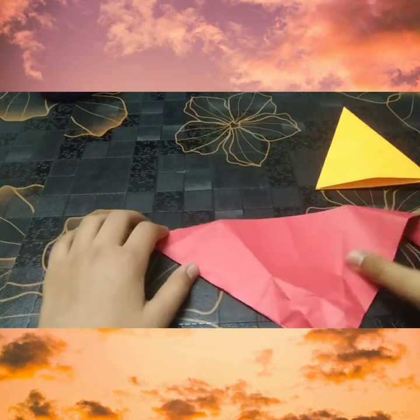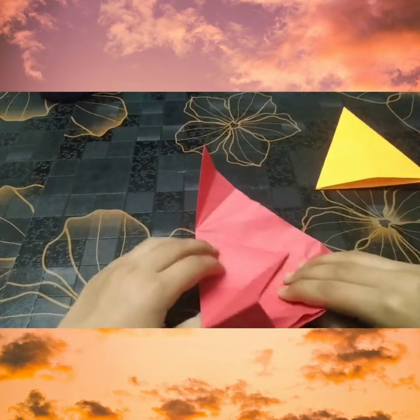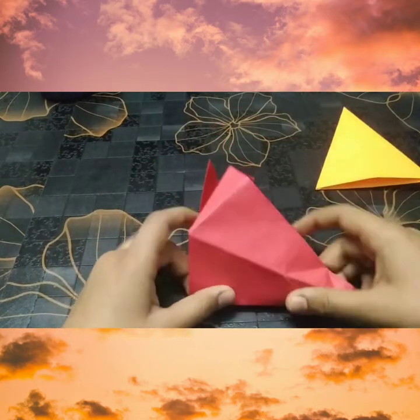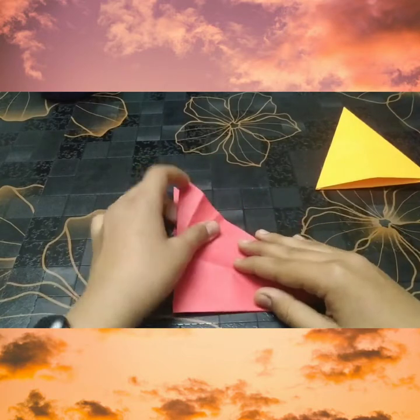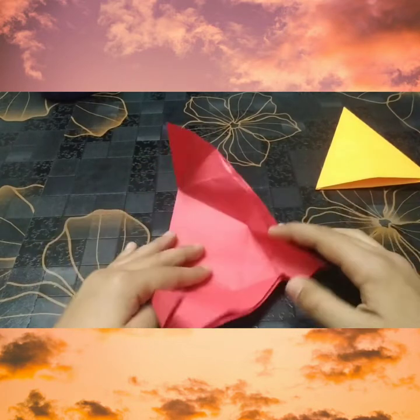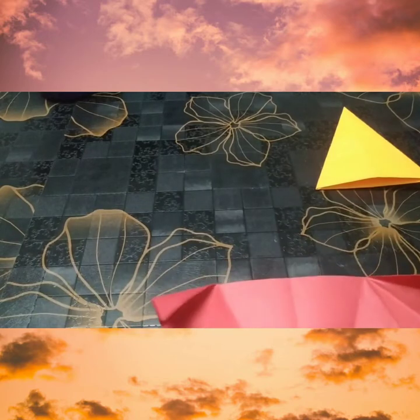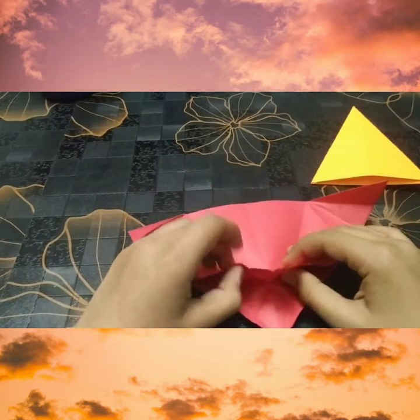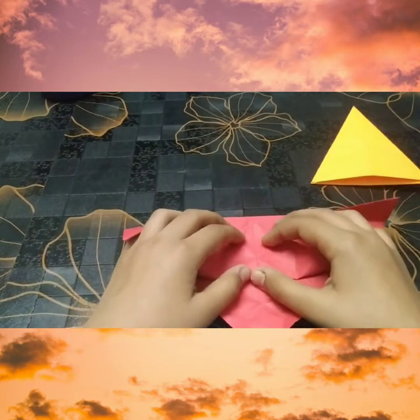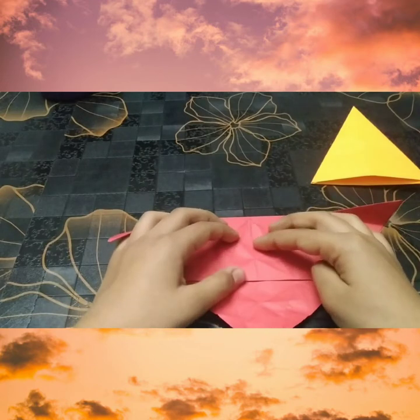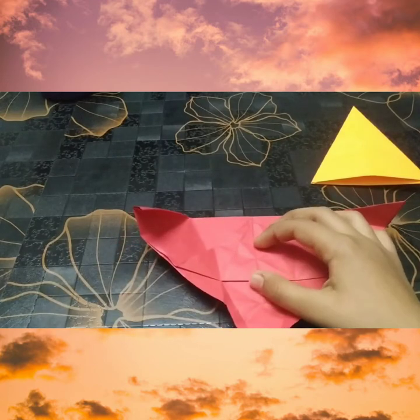Fold in half diagonally. Fold in half in the other direction. Open. Fold the top part to the bottom part and make sure that the center line aligns with the center line below it. It should be straight.